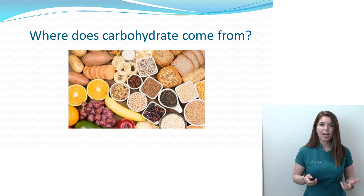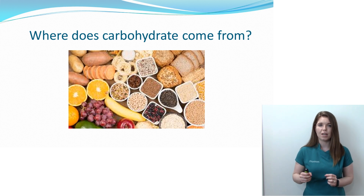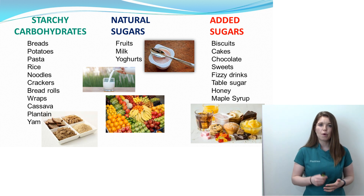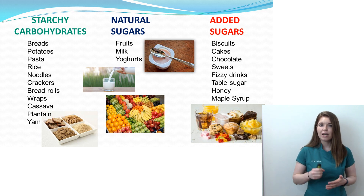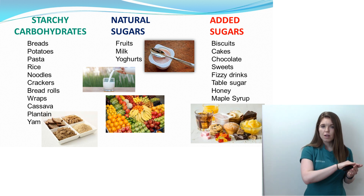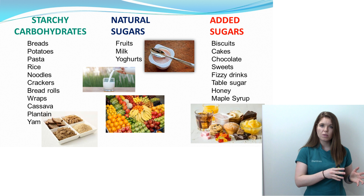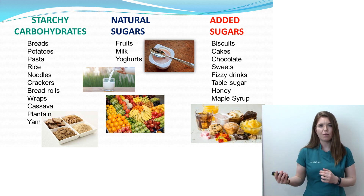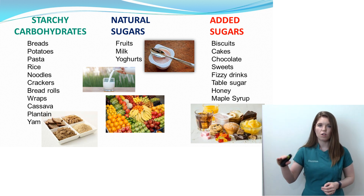So where do carbohydrates actually come from? The three main sources are starchy carbohydrates — foods like bread, rice, potatoes, pasta, yam, and plantain. These have a nice gradual release of sugars into your bloodstream, which is what you want. What slows that down even further is if these foods are higher in fibre. So things like brown bread, brown rice, or brown pasta have a slow release of sugars into your bloodstream, which is what you're looking for.